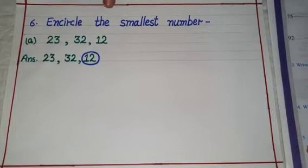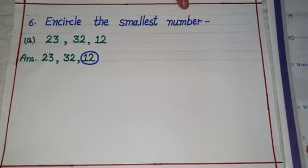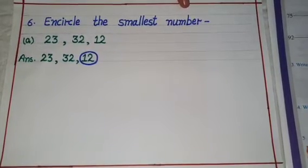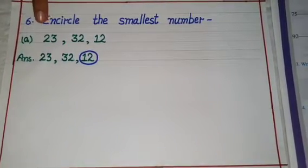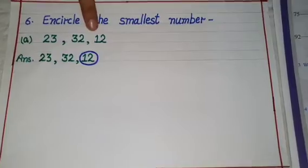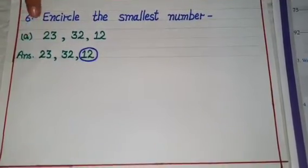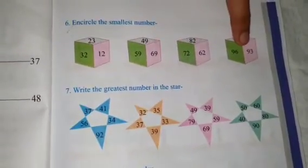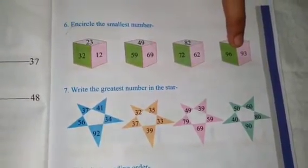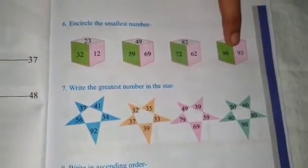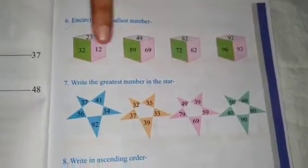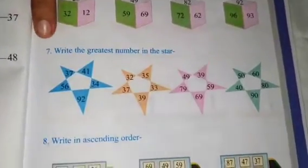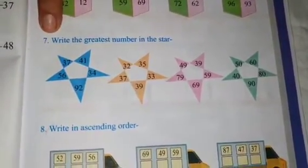Uncircle the smallest number. First note down the sum and then solve it. You can see the same sort of next 3 sums — you will solve them in your notebooks. Now we will do 7th sum.